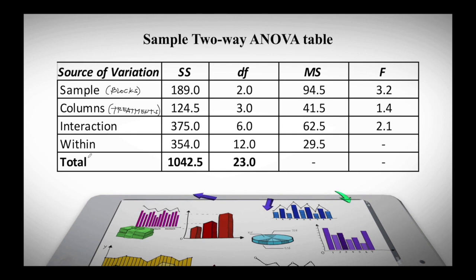When we say interaction, we are looking if there is really an interaction between the variable on the blocks and the variables on the treatments — whether the interaction exists or doesn't exist. The 'within' is just the same as the error on our previous ANOVA topic. So that is the difference of two-way ANOVA. We have four rows inside our table, with sum of squares, degrees of freedom, mean square, and the F computed. We now have three F computed values.